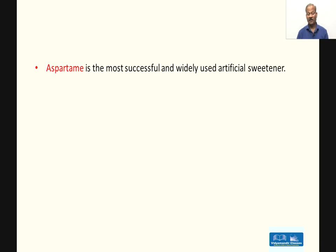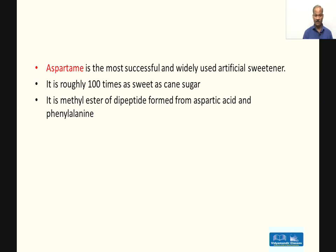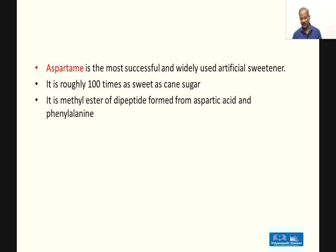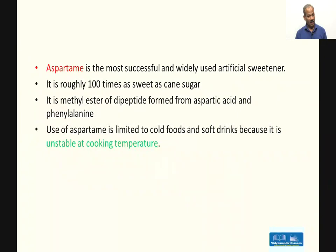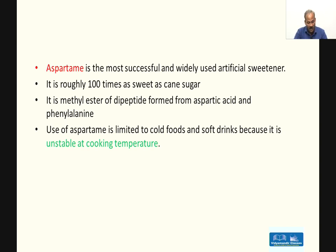Another artificial sweetener is aspartame, which is the most successful and widely used artificial sweetener. It is roughly 100 times as sweet as cane sugar. It is basically the methyl ester of a dipeptide — and that dipeptide is formed from aspartic acid and phenylalanine. This is important since amino acids are in our syllabus. One key problem with aspartame is that its use is limited to cold foods and soft drinks because it is unstable at cooking temperature. A question may be asked: which artificial sweetener is unstable at cooking temperature, or used in cold foods? The answer is aspartame.